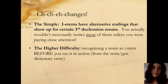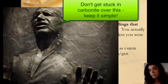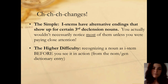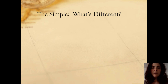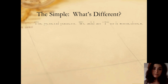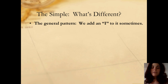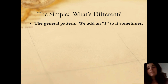The harder part is recognizing a noun as an i-stem before you actually see it in action — doing so from the dictionary entry. I-stems aren't really that dramatic; they're just a slight change of the ending that you will see in certain cases, not all cases.